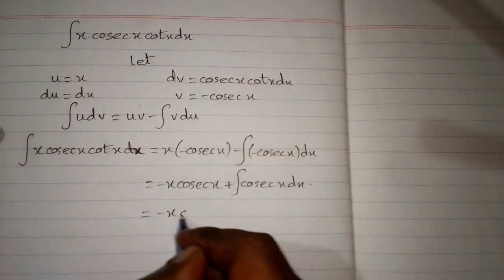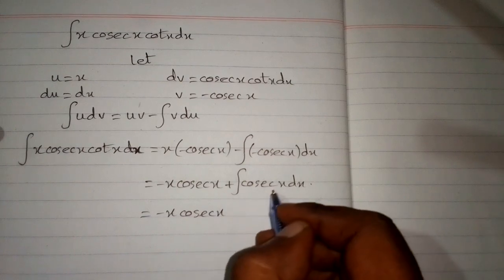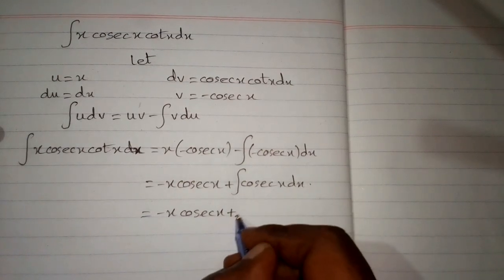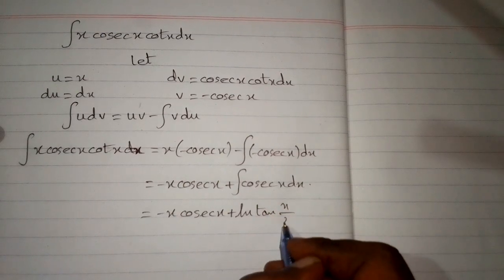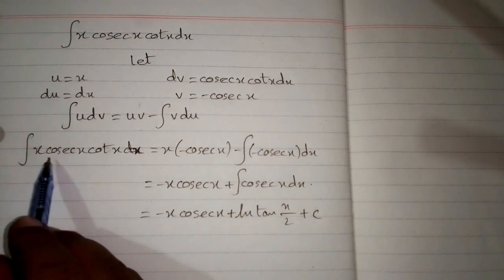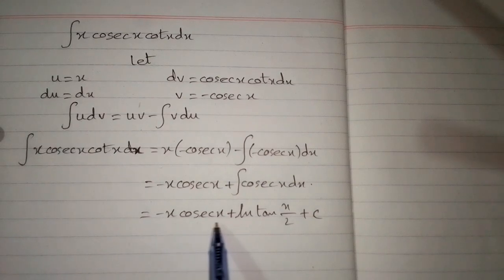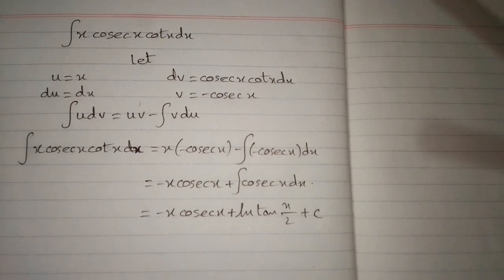The integral of cosec x is ln of tangent of x upon 2. So the final answer for the integral of x times cosec x cot x is minus x cosec x plus ln of tangent of x upon 2, plus c, where c is the constant of integration.